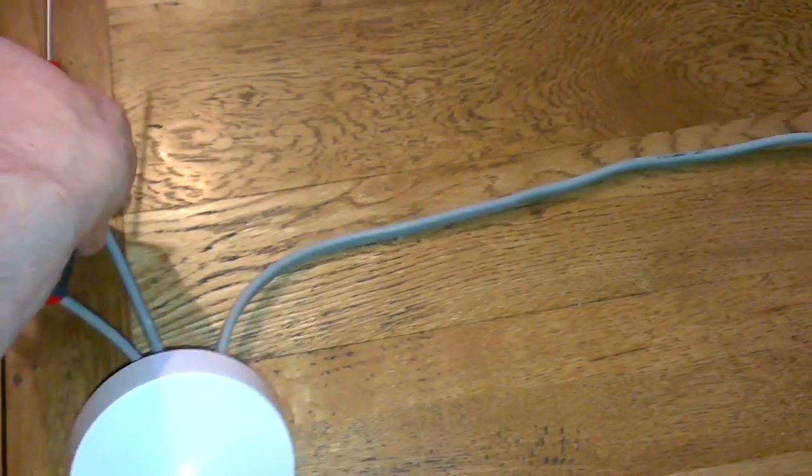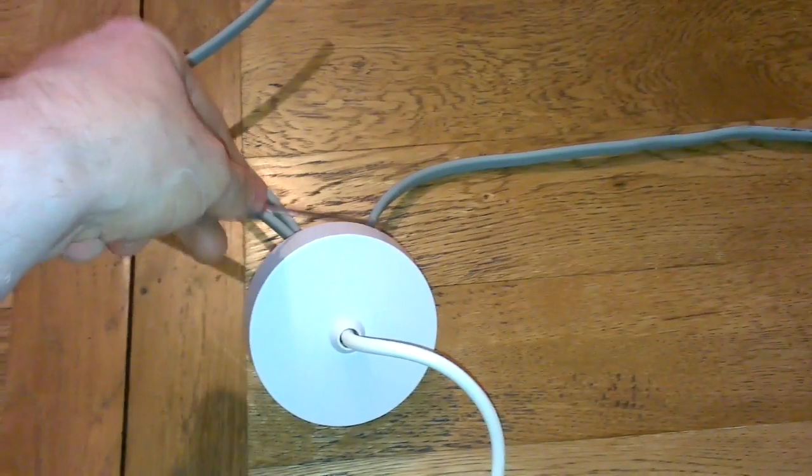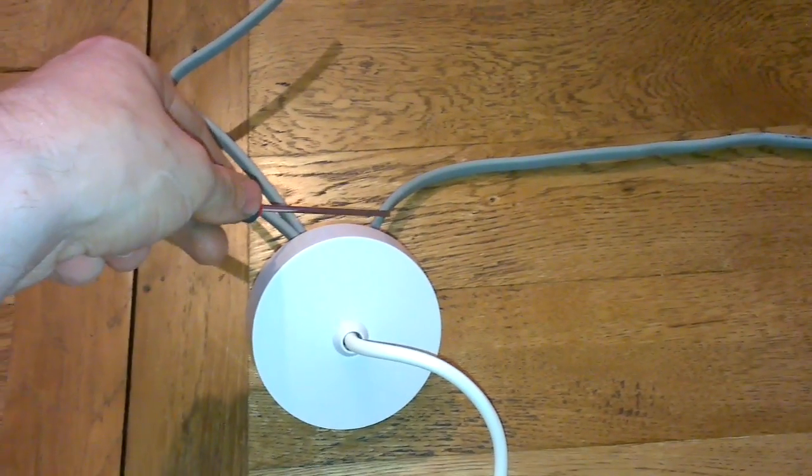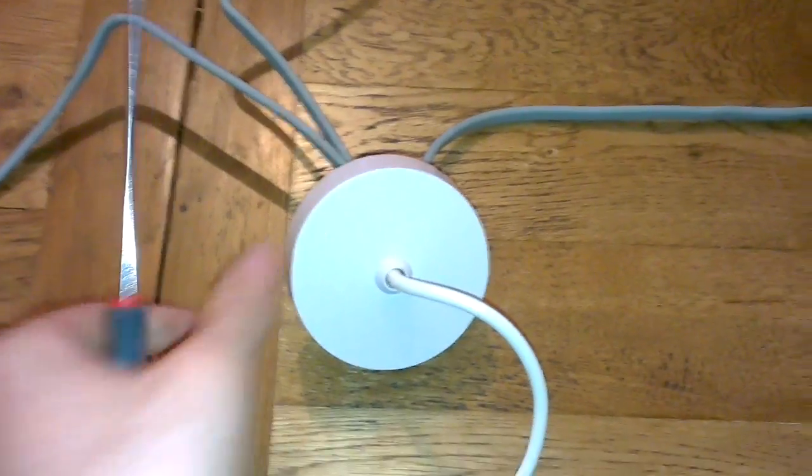Then you've got your live, neutral, and earth out, going on to your next light to power your next light. Then you've got your two browns and an earth, twin brown we call it, to your light switch. That's the basic wire of a one-way light switch.